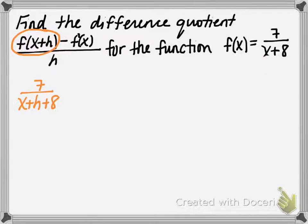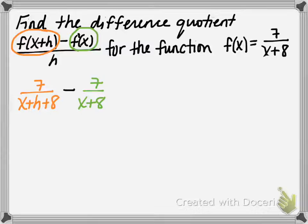Then we need to subtract f of x — that's just the original function, 7 divided by x plus 8. And this entire quantity is divided by h. This is what we call a complex fraction — a fraction within a fraction.